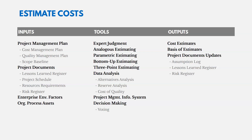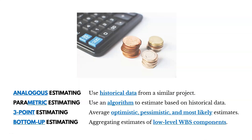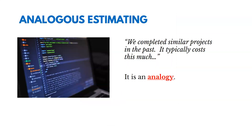We also have project documentation, enterprise environmental factors, and organizational process assets. When it gets to the tools section, let's focus on those four key estimating techniques. Analogous estimating uses historical data from a similar activity or project — using some comparison or analogy. Parametric estimating uses an algorithm to calculate cost or duration based on historical data. Three-point estimating aggregates optimistic, pessimistic, and most likely estimates. And bottom-up estimating aggregates the estimates of lower-level components of the WBS, starting at the bottom and adding them up.